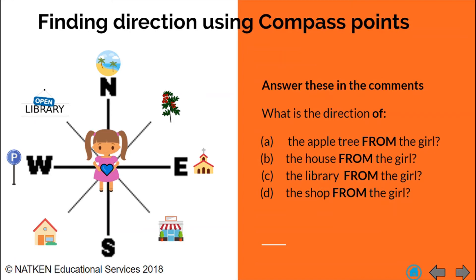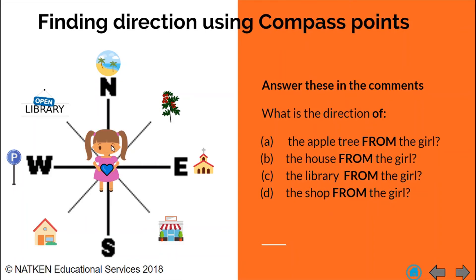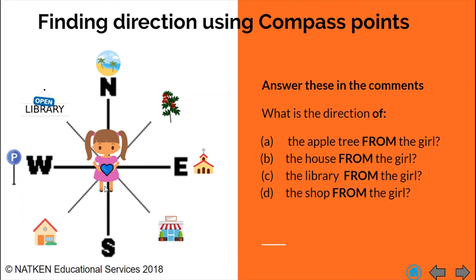I will do one more for you, and for the others I would like you to answer them in the comment section below — I will certainly be looking out for your answers. The other one I'm going to do is B: what is the direction of the house from the girl? The house is here. We are starting from her at the center, and the direction she would need to go to get to the house would be down here — so that gives us southwest.